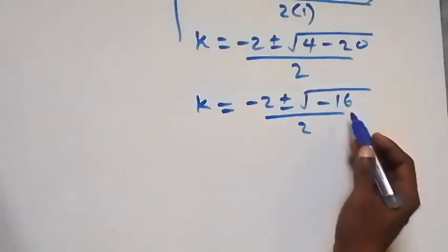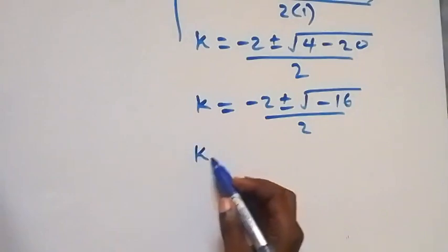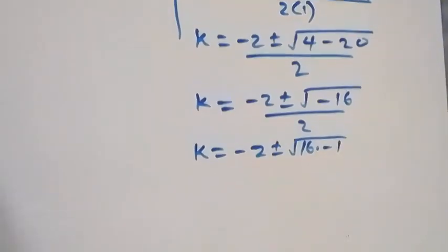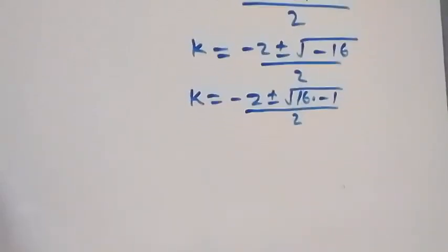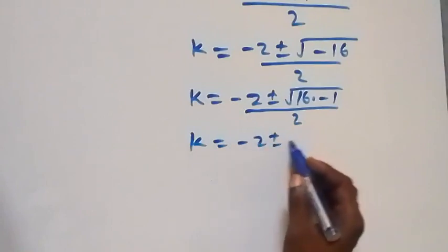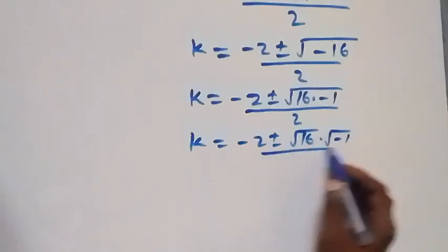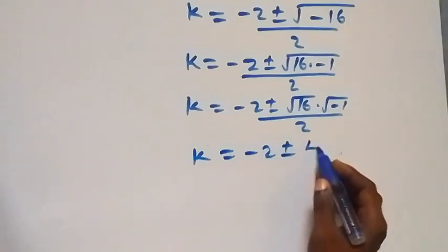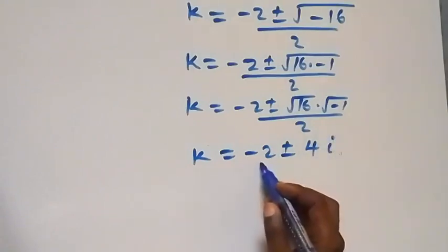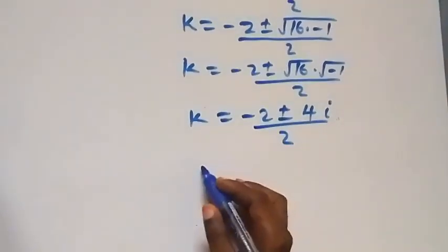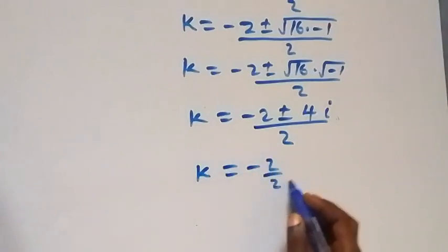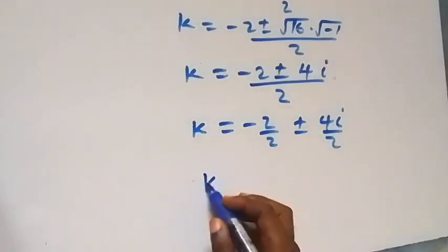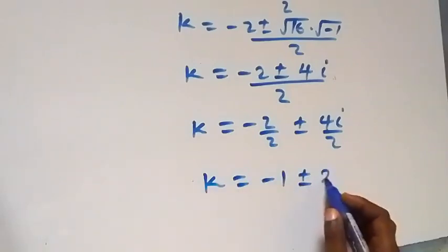We can write root of minus 16 separated as root of 16 times minus 1, over 2. Which implies that k equals to minus 2 plus or minus root 16 times root of minus 1, over 2. And root 16 is 4, and root of minus 1 is i, the imaginary number. So k equals to minus 2 over 2 plus or minus 4i over 2, which reduces to k equals to minus 1 plus or minus 2i.